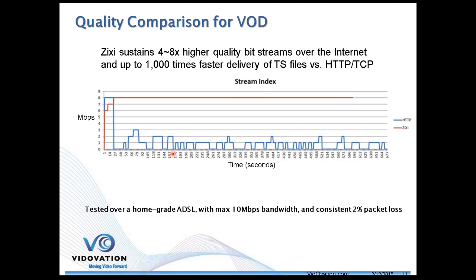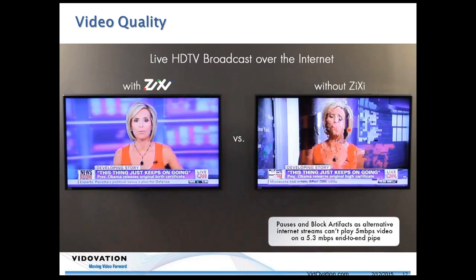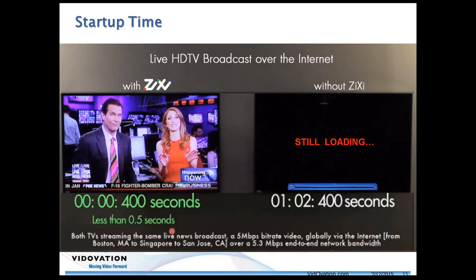In another example, two identical 5-megabit-per-second feeds were passed through the internet — one with Zixi, one without. Without Zixi, you see blocking artifacts and buffering; the generic transport stream cannot handle the poor internet connection. And in a typical scenario, without Zixi the system was still trying to load the video after over a minute, while with Zixi it loaded in 400 milliseconds — less than half a second — even for a stream that was bounced around the globe.